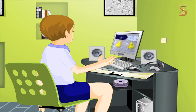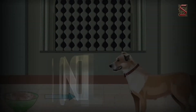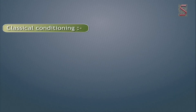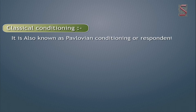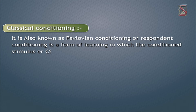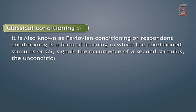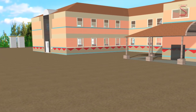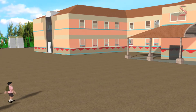Classical conditioning, also known as Pavlovian conditioning or respondent conditioning, is a form of learning in which the conditioned stimulus (CS) signals the occurrence of a second stimulus, the unconditioned stimulus (US). The conditioned response is a learned behavior. For example, in school when the bell rings in the morning, students gather for assembly.